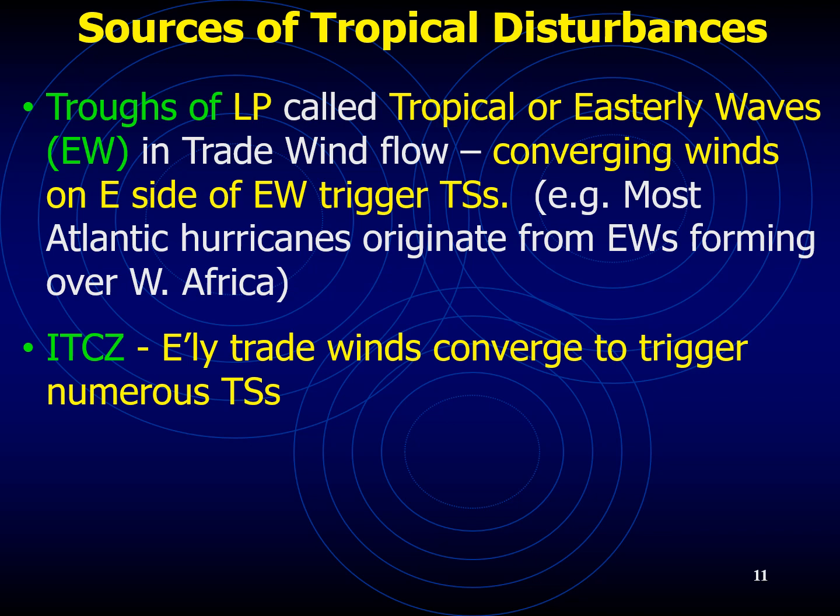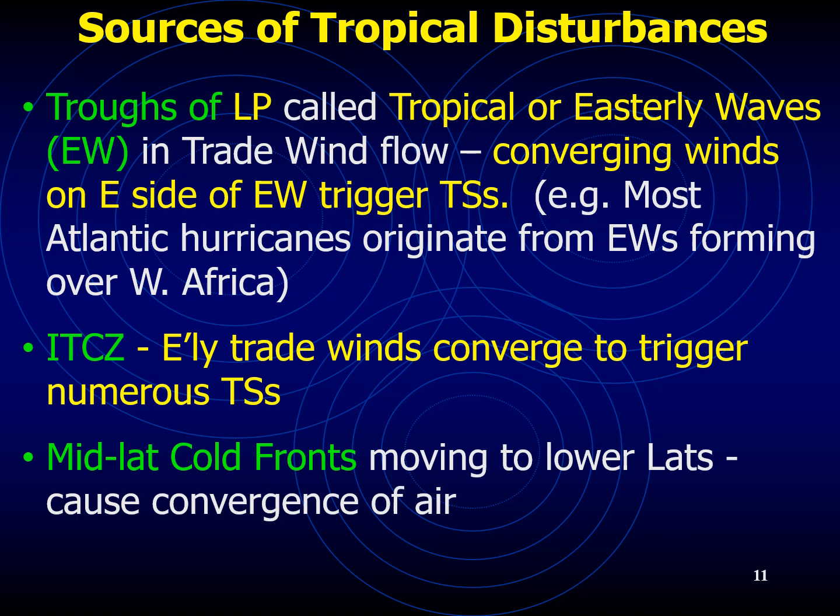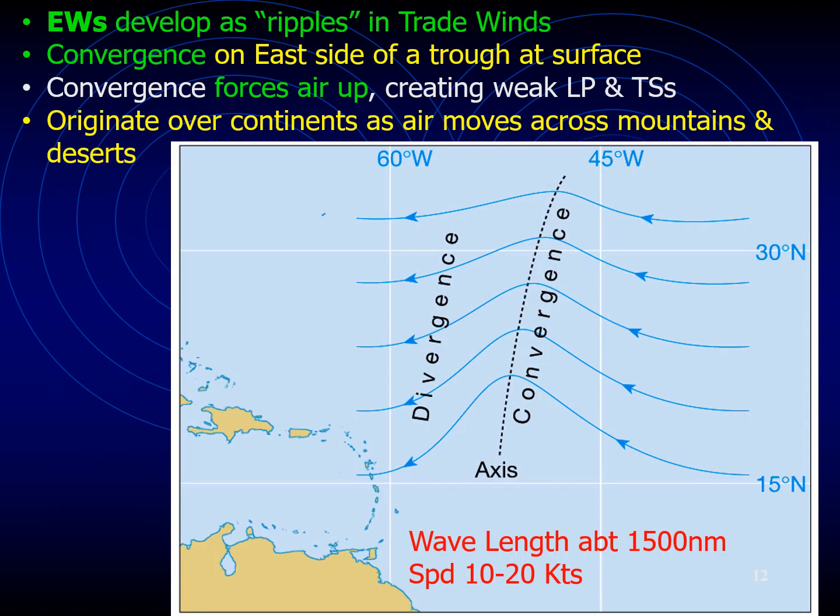Tropical waves have a wavelength on the order of about 2,500 kilometers and travel from east to west at speeds of about 10 to 20 knots. They are formed by the bending of the streamlines that show wind flow patterns. The heavy dashed line is the axis of the trough. The wave moves slowly westward, bringing fair weather on its western side and showers on the eastern side, where the southeasterly winds converge. Rising air generates showers and thunderstorms. Occasionally an easterly wave will intensify and grow into a hurricane.